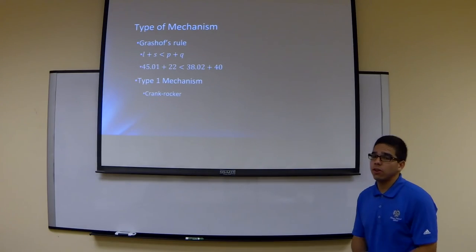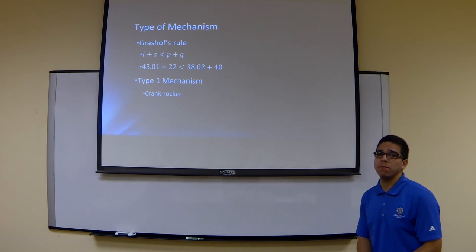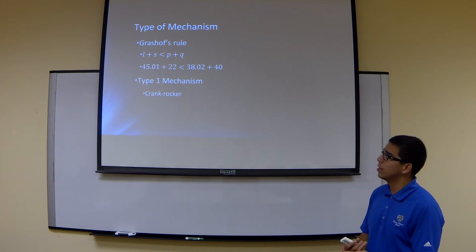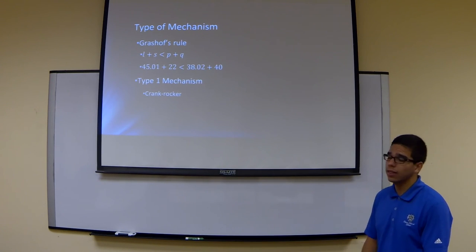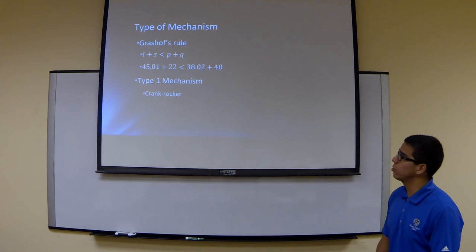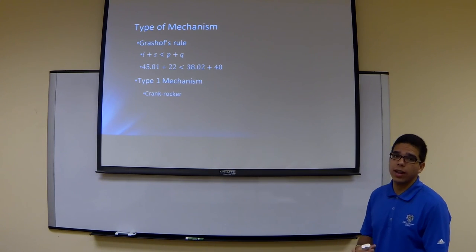So once our link lengths are known and verified, we have to determine what type of mechanism we have. So using Grashof's rule, which is the longest link length plus the shortest link length, has to be less than the two intermediate link lengths. If that inequality is proven to be true, then we have a type 1 mechanism, which for our case it was, so we had a crank rocker.